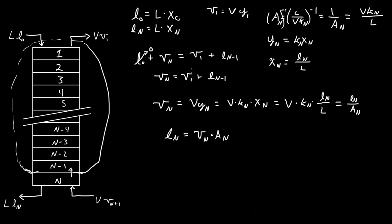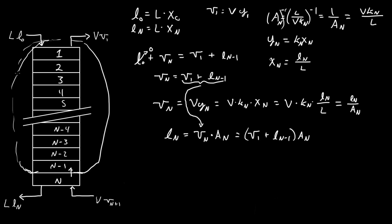This is also what Vn is equal to, so we take this component and plug it in, giving us Vn equals V1 plus Ln minus 1, all times An. Then we're going to repeat the entire process one more time around this area, now assuming Ln equals 0.